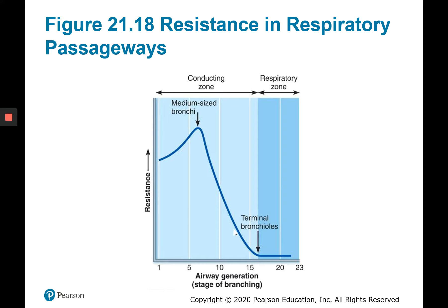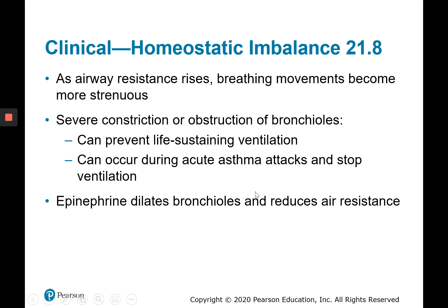There are certain homeostatic imbalances that could introduce resistance, things like inflammation or mucus buildup that would block bronchioles. If airway resistance rises, that's going to slow or impede airflow, making breathing more strenuous and causing chest pain, especially if it's preventing life-sustaining ventilation. This could occur during an acute asthma attack, where inflammation and mucus buildup could block bronchioles and prevent breathing completely.